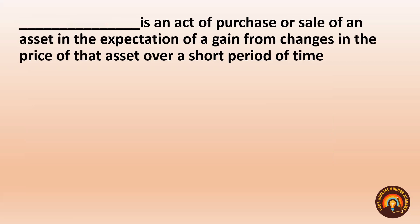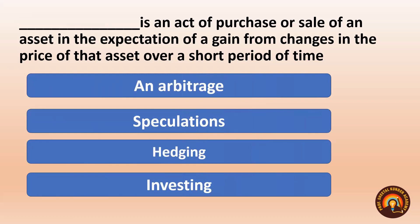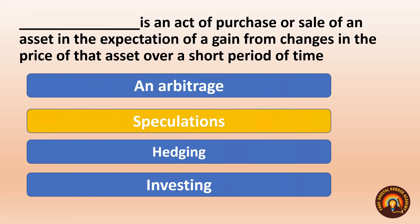Next: Dash is an act of purchase or sale of an asset in the expectation of a gain from changes in the price of that asset over a short period of time. When we speak of a short period, we are talking about speculation. Speculators anticipate price movements in the very short term, either purchasing and then selling, or doing short sales — all with the intention of gaining profit. The answer is speculation.